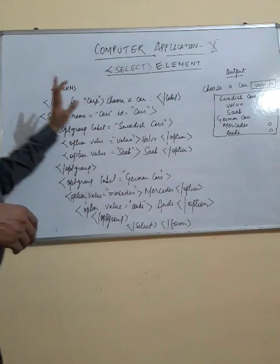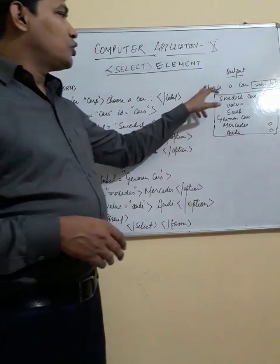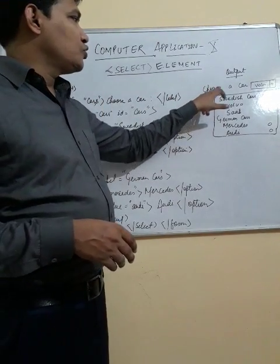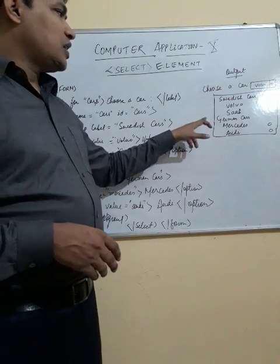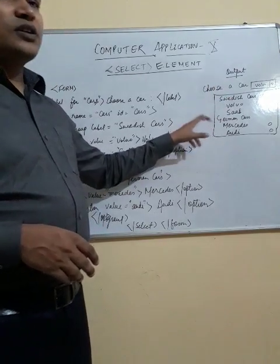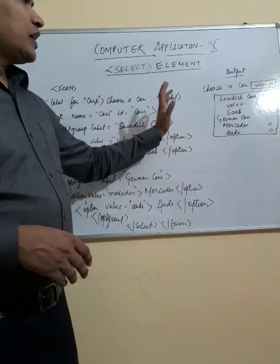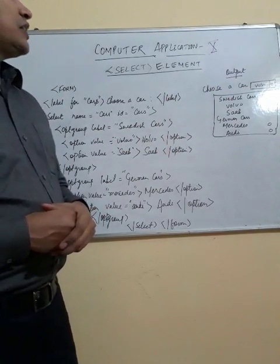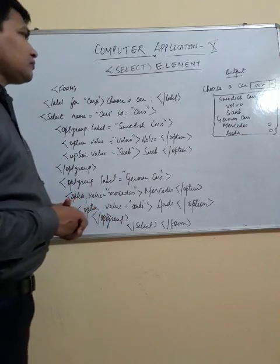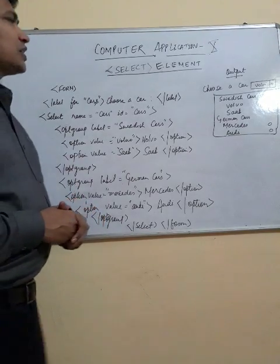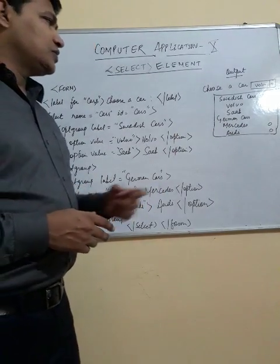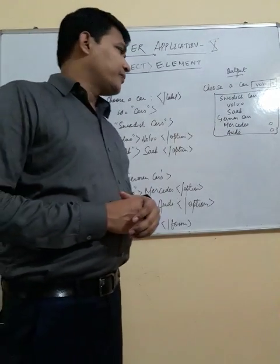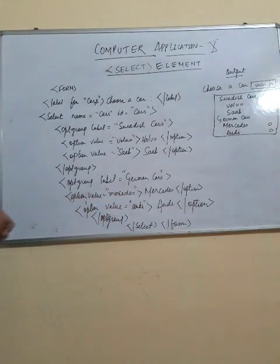Let me show you the output. We have 'Choose a Car' and we define two categories: Swedish Cars and German Cars. The Swedish cars are Volvo and Saab, and the German cars are Mercedes and Audi.